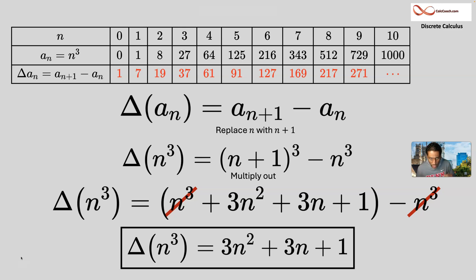That's the formula that those red numbers up there obey. So forward difference applied to a cubic is a quadratic. Forward difference applied to a quadratic is linear. You're going down in power by 1.